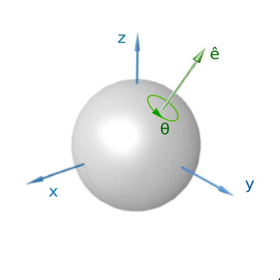The only other possibility for the determinant of an orthogonal matrix is −1, and this result means the transformation is a hyperplane reflection, a point reflection, or another kind of improper rotation. Matrices of all proper rotations form the special orthogonal group.